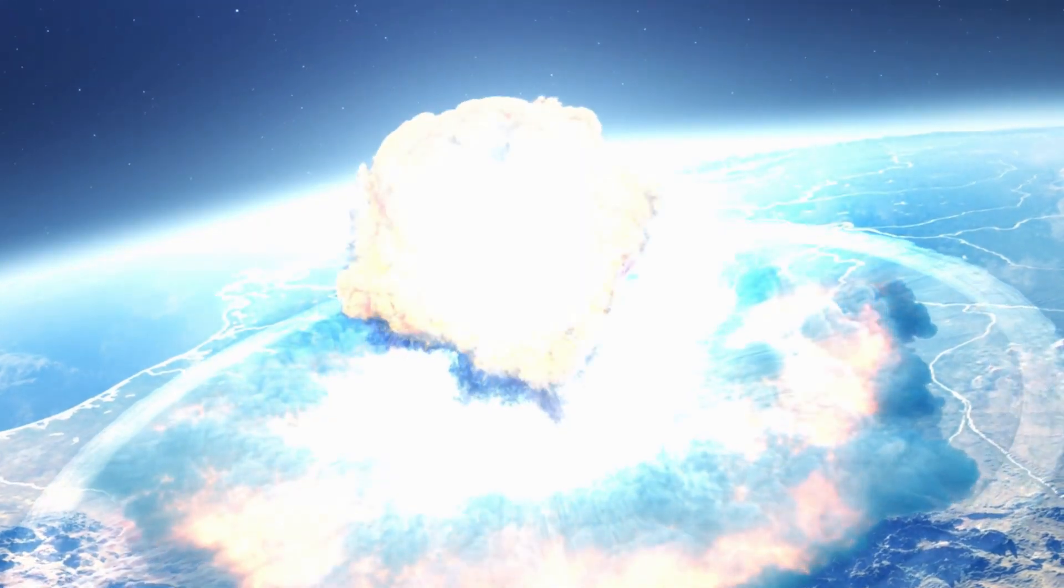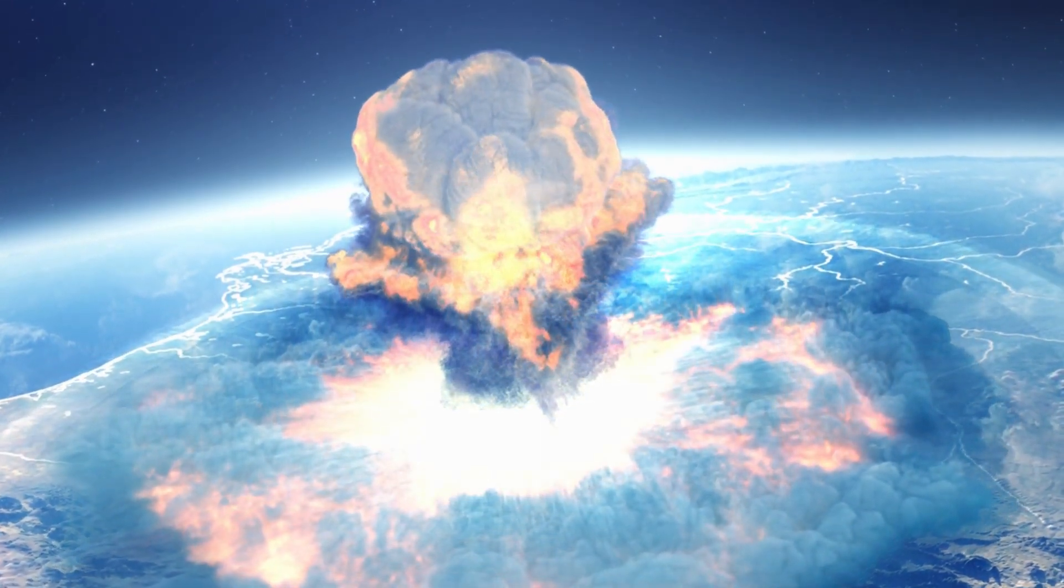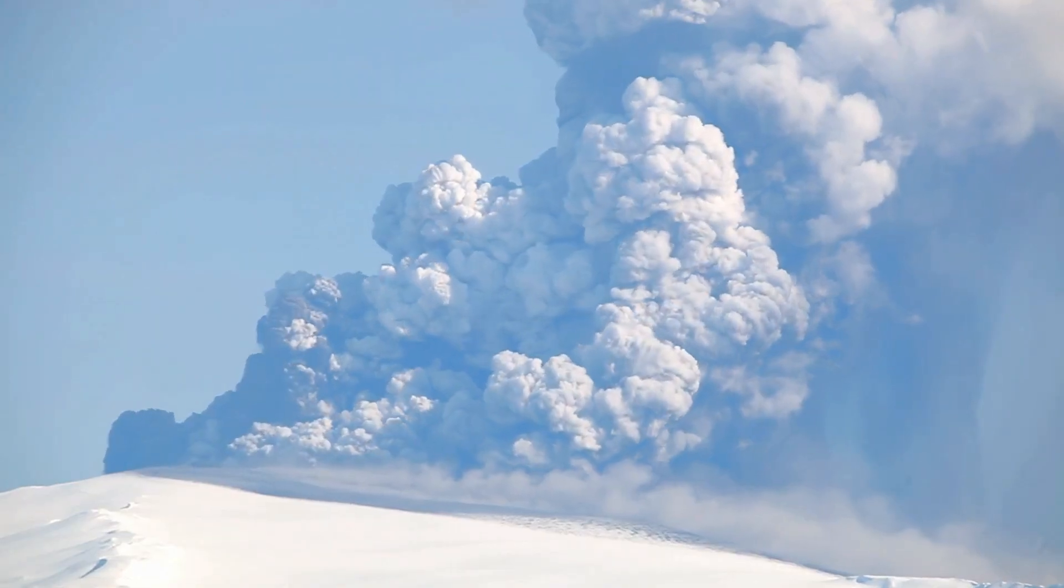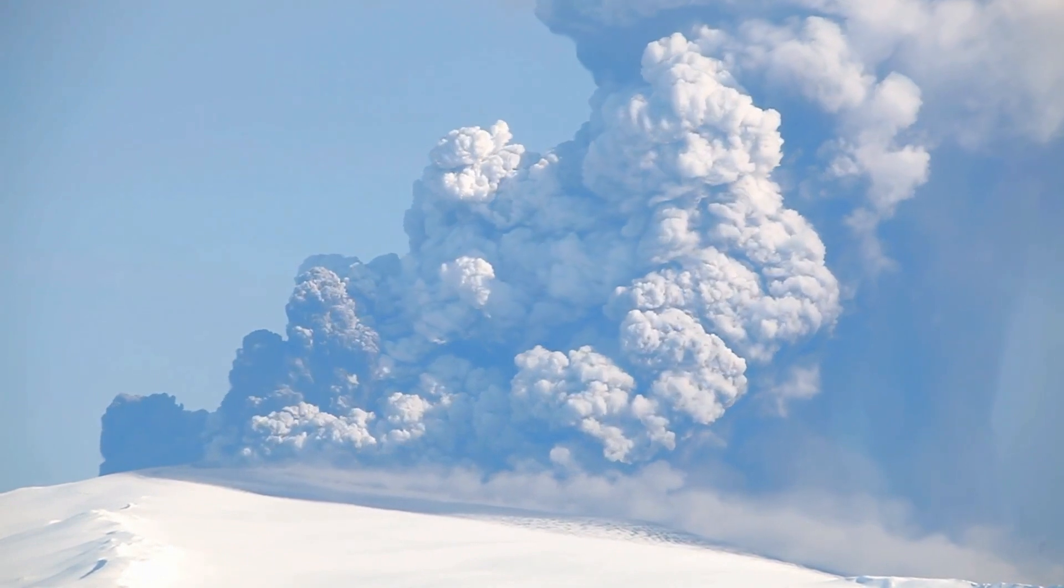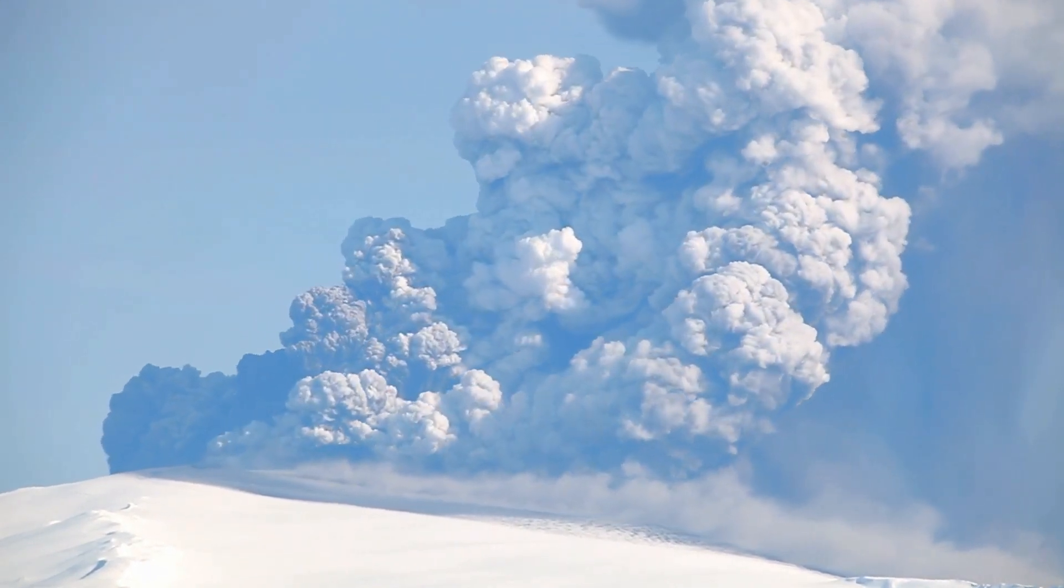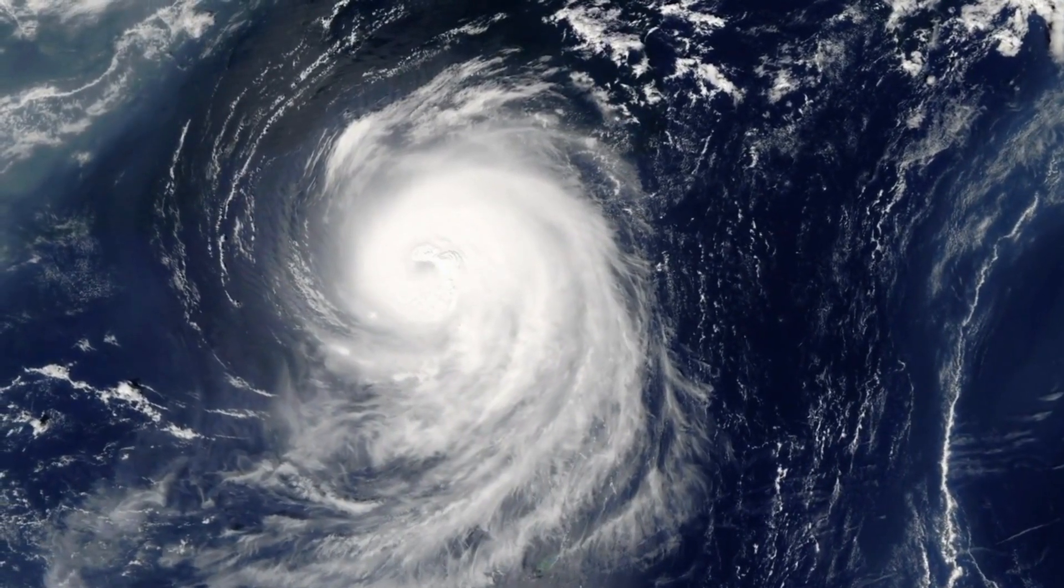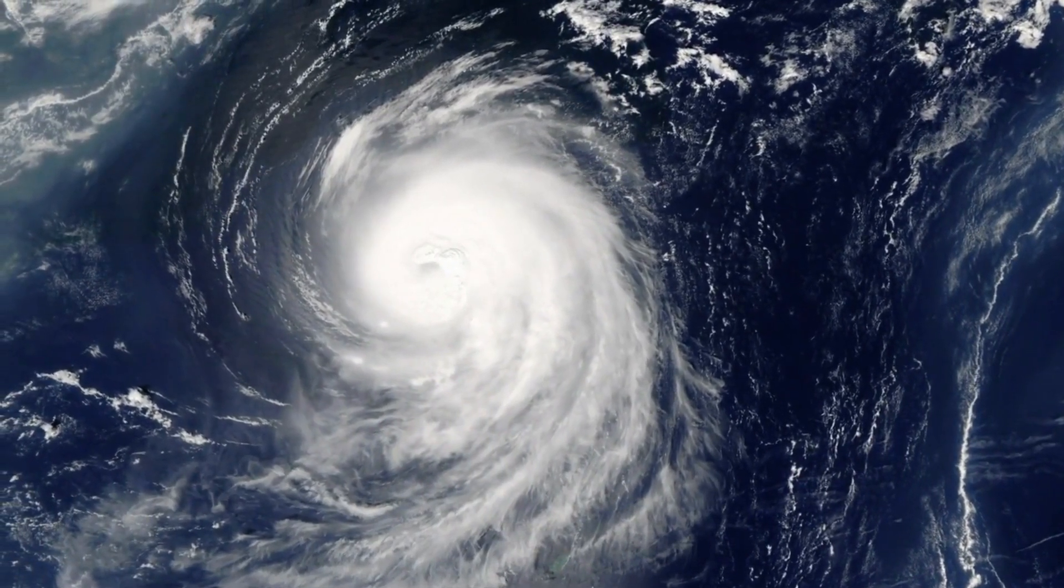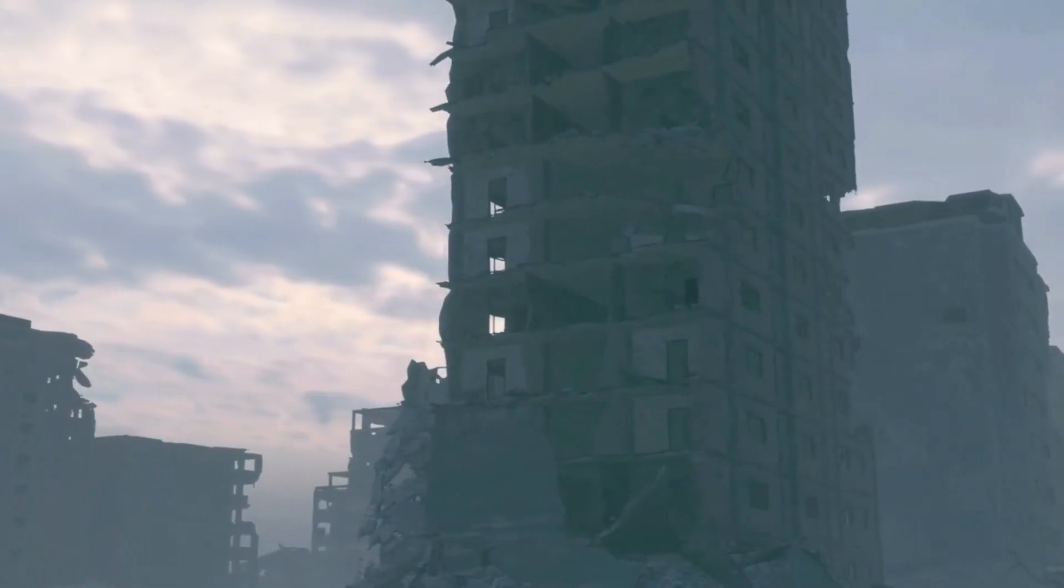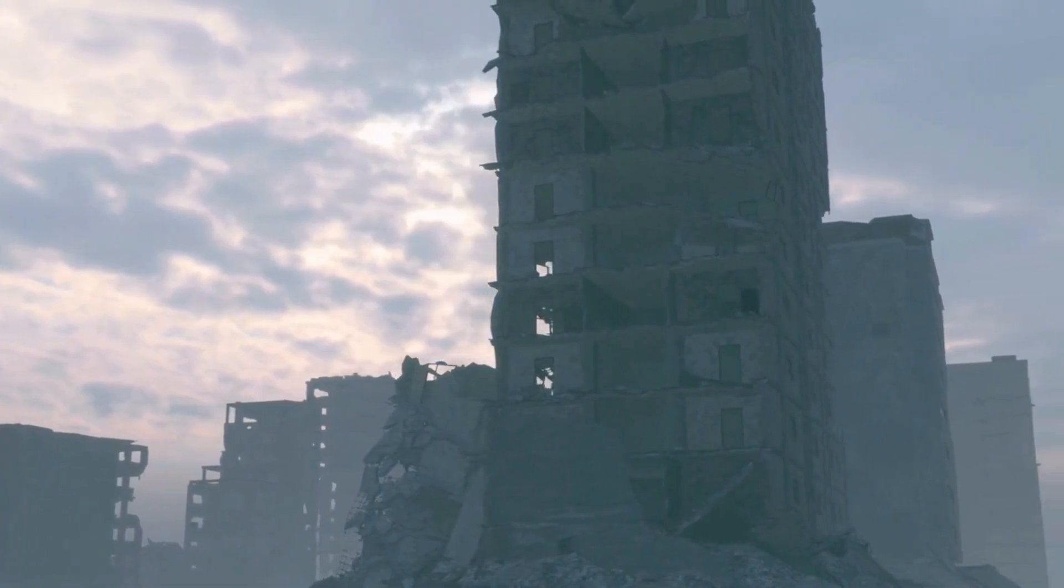These impacts wouldn't just be powerful explosions destroying all life within their shockwave radius. Asteroid impacts could trigger volcanic eruptions, tsunamis, and other massive destruction. For example, if an asteroid the size of Mount Everest slammed into Earth at high speed, it could create a crater hundreds of miles wide and release enough energy to wipe out most forms of life.